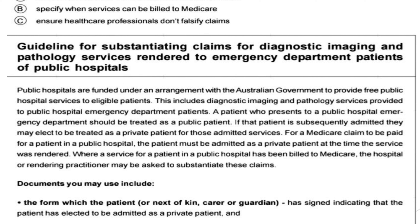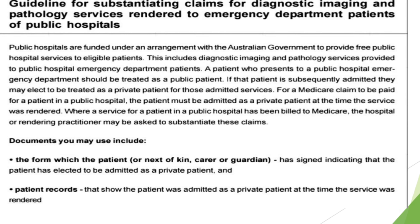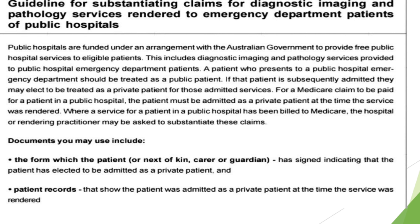Documents you may use include — what documents are used? The form which the patient, or their next of kin, carer or guardian, has signed indicating that the patient has elected to be admitted as a private patient. And the patient records that show the patient was admitted as a private patient at the time the service was rendered.